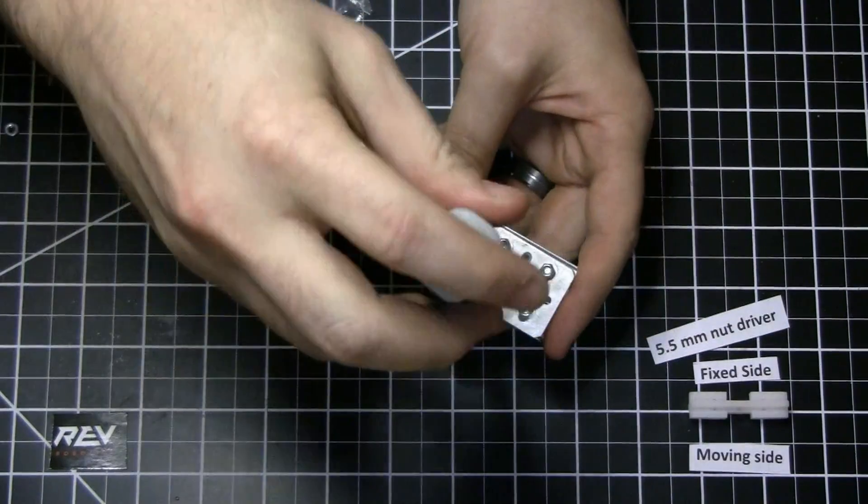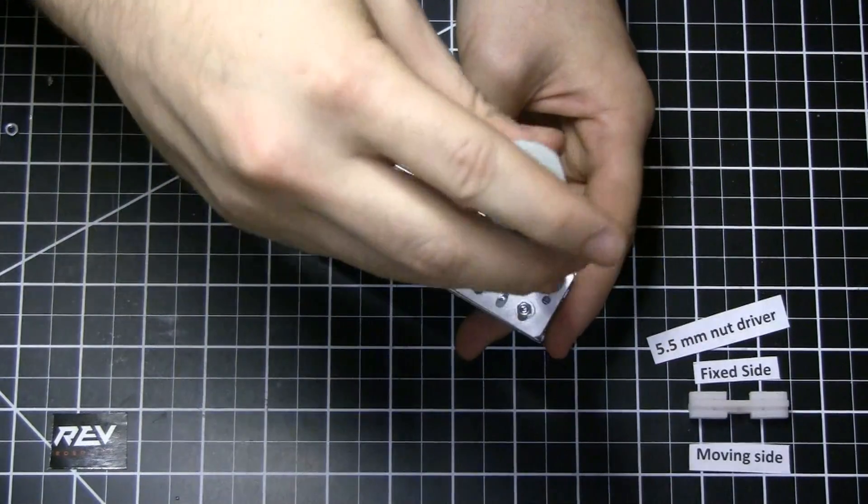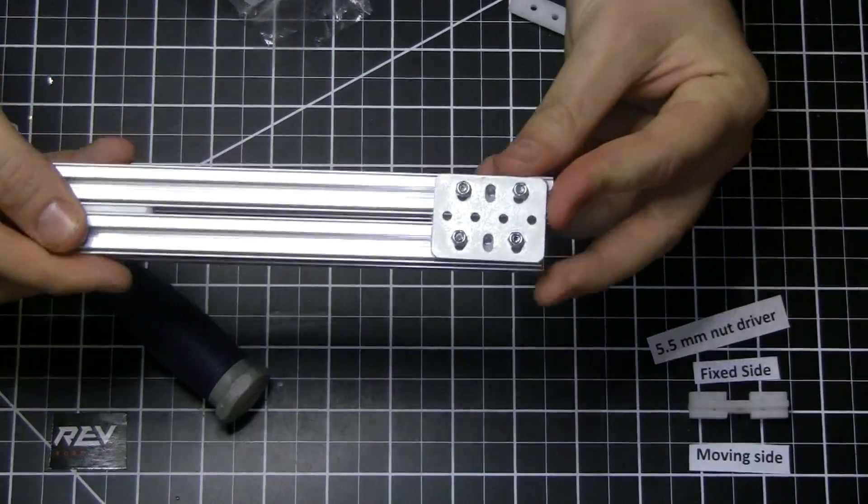The ones on this side you can basically tighten as much as you want and the other ones you just want to barely engage the nylon on the provided screws. And then there you have it.